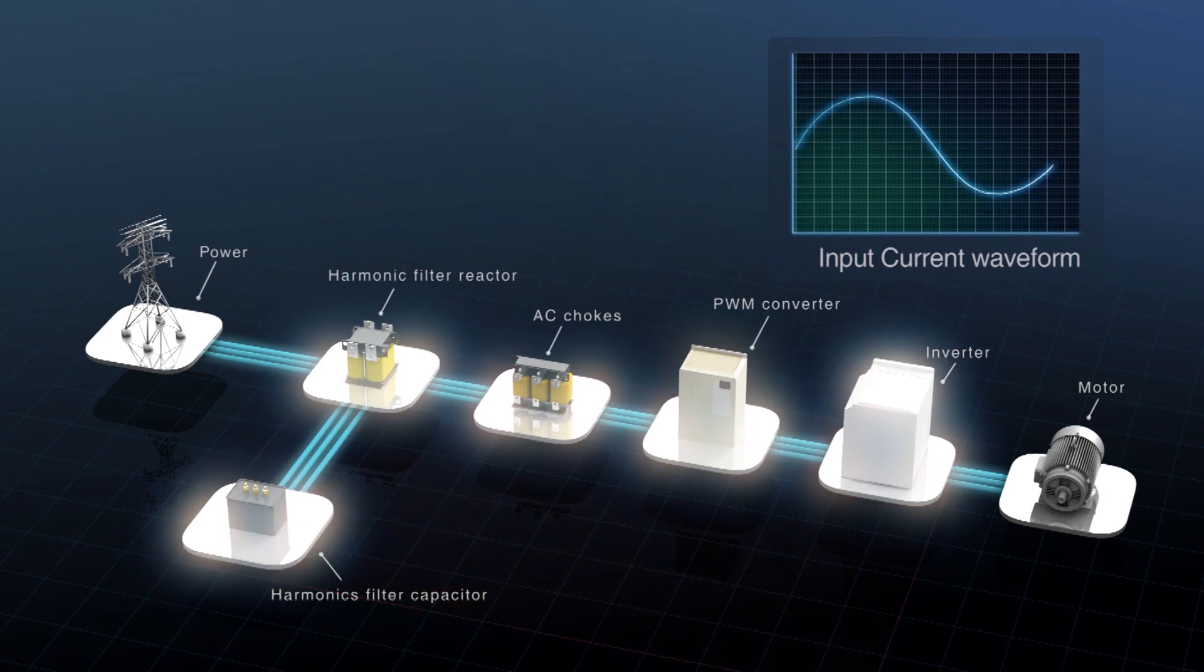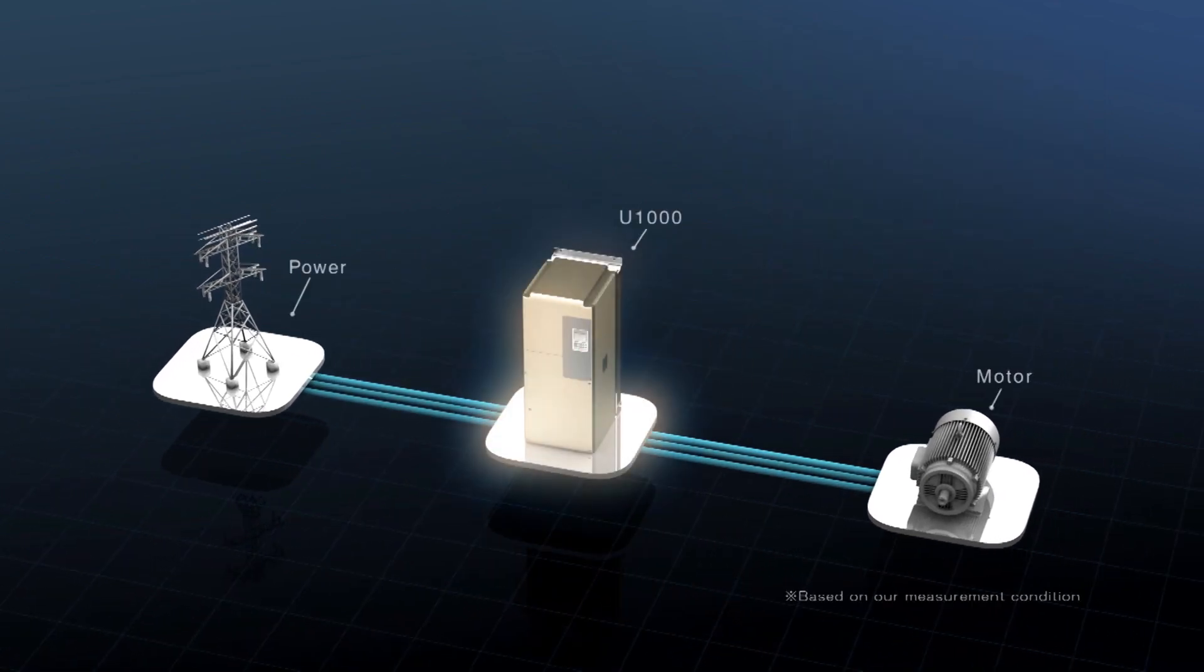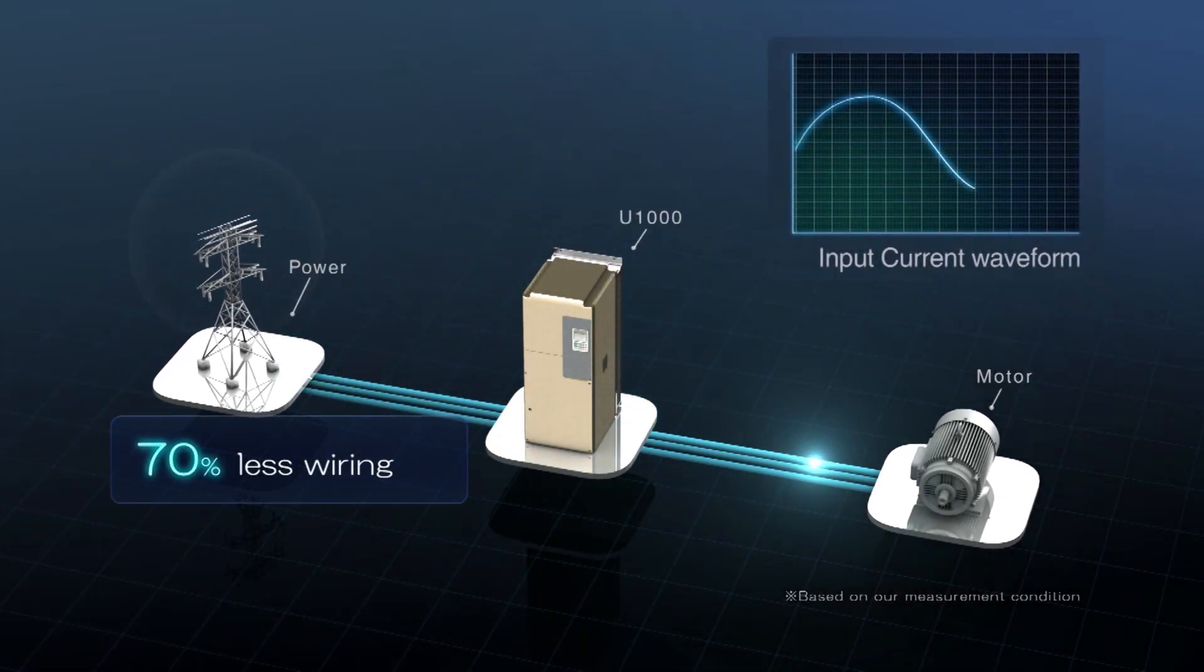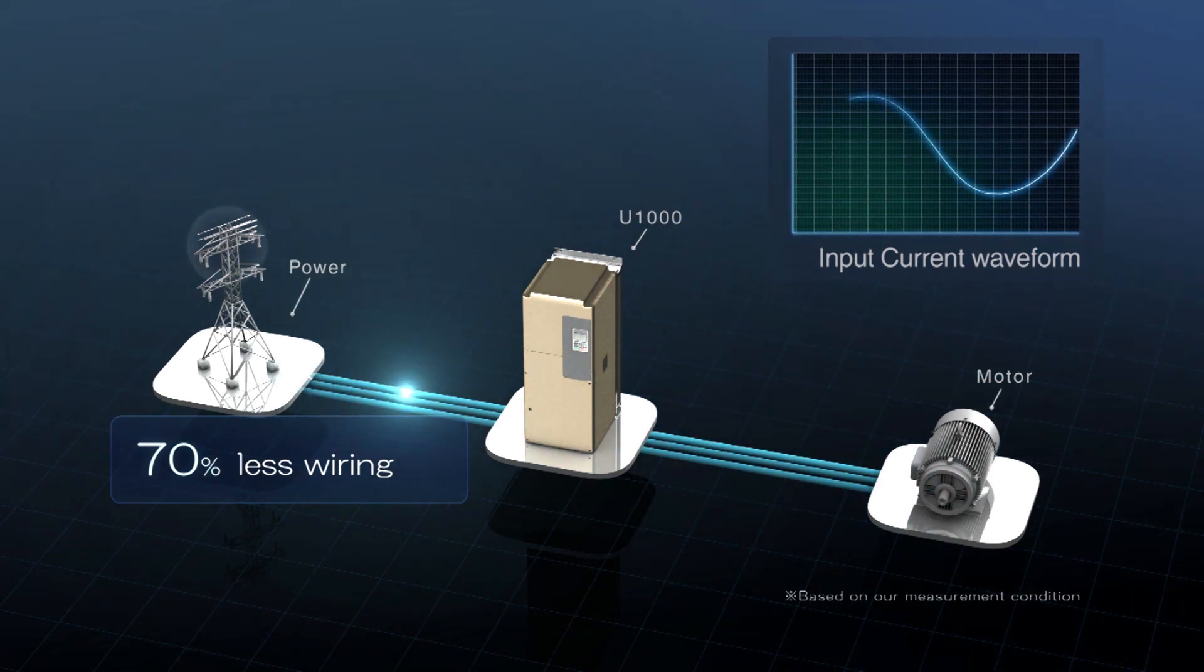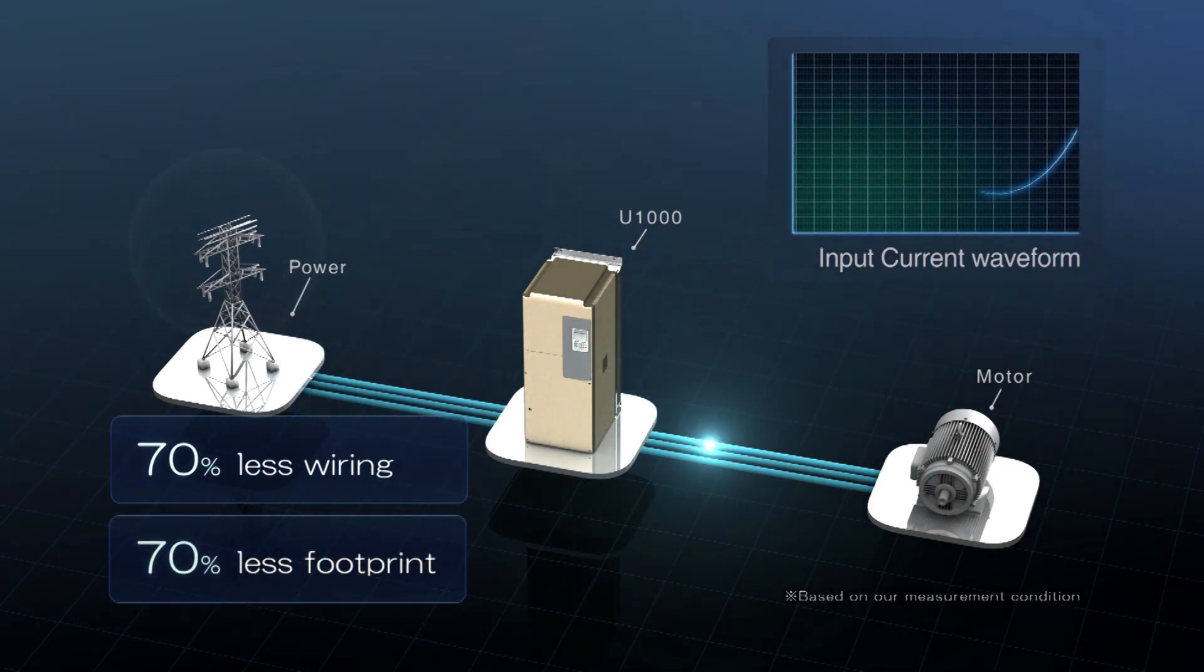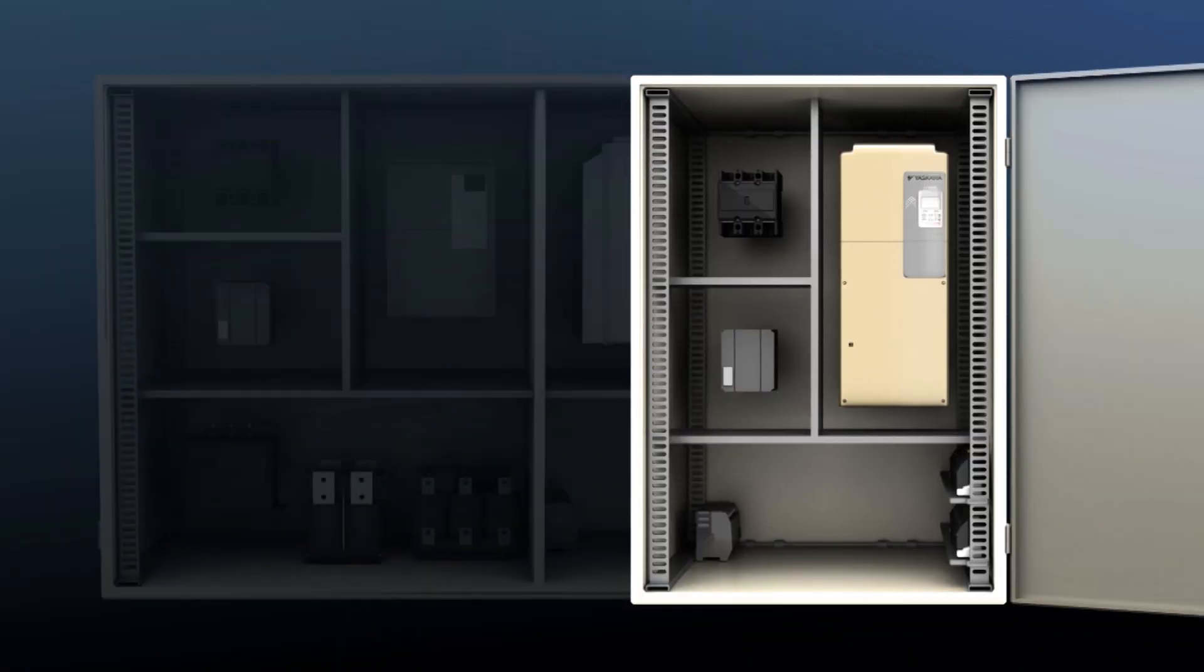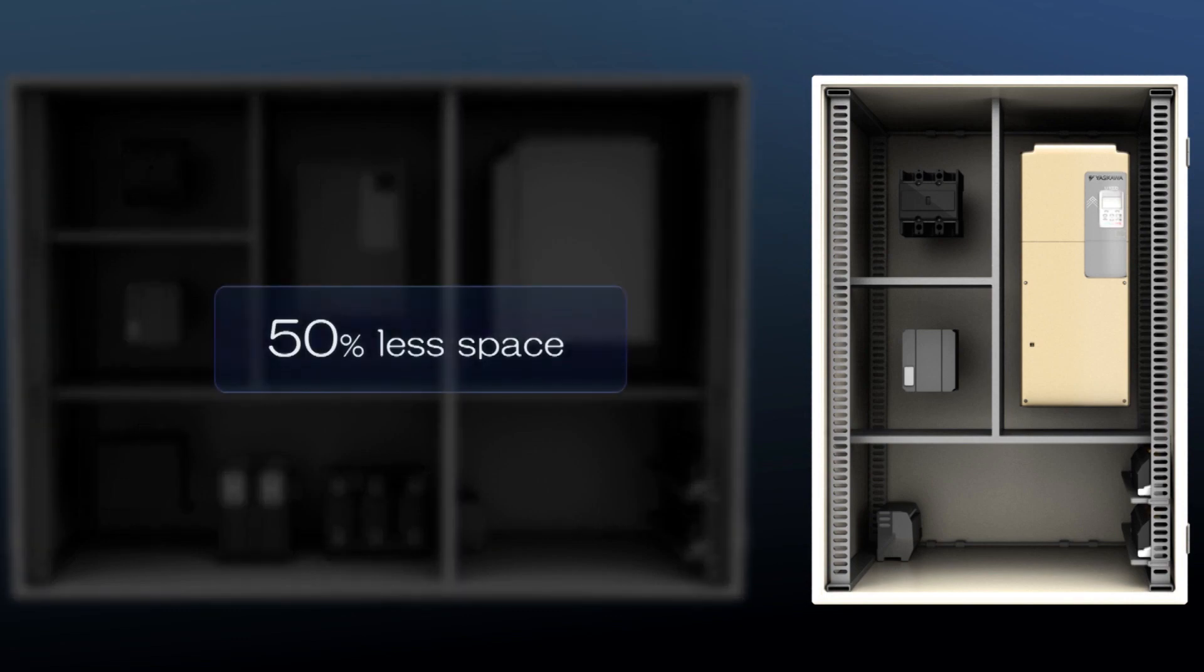The Yaskawa Matrix converter U-1000 realizes a 70% reduction in wiring, a 70% reduction in installation area, and a 50% reduction in physical space.